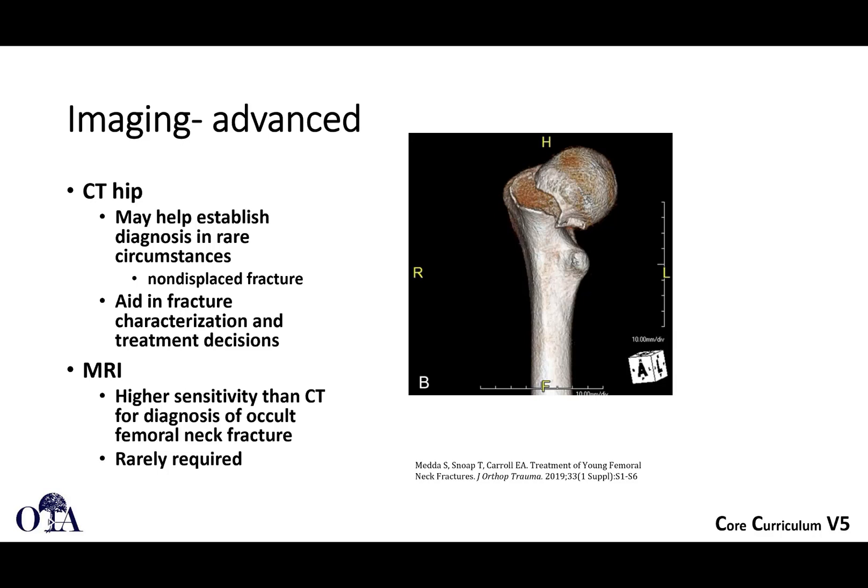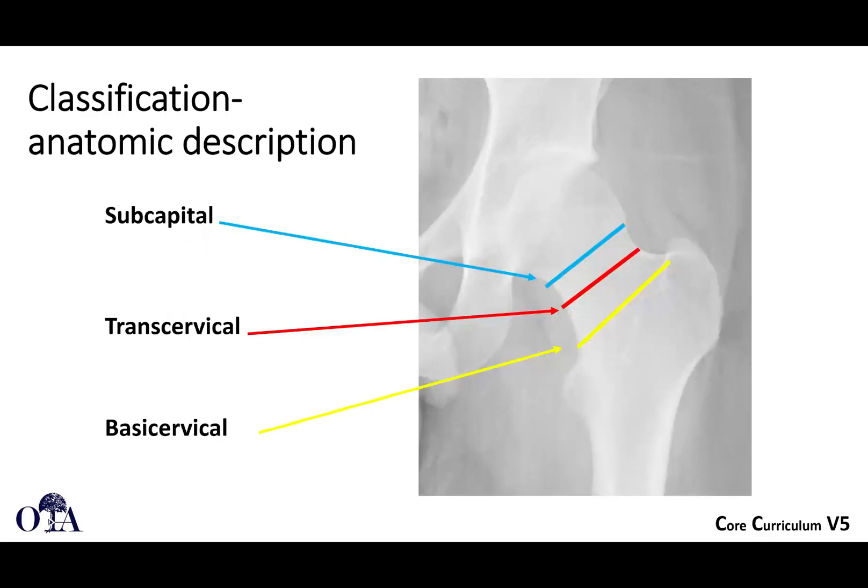CT scans can also be helpful as they can demonstrate the fracture pattern in confusing circumstances, help identify a non-displaced fracture when you may not otherwise see one, and help identify the trajectory of the fracture line to assist intraoperatively. If you suspect a femoral neck fracture based on clinical examination and history but don't see anything, an MRI has higher sensitivity to detect an occult fracture. CT scan will pick up most non-displaced femoral neck fractures presenting to the emergency department.